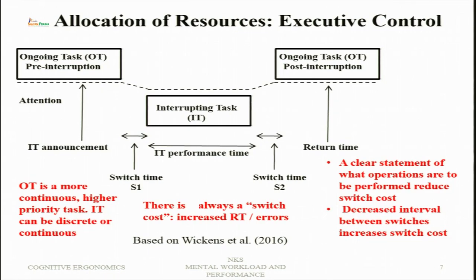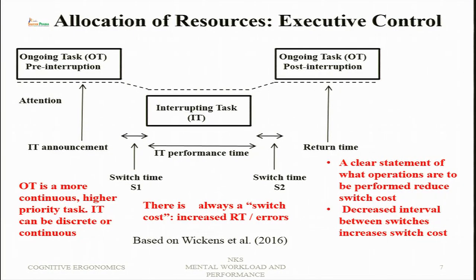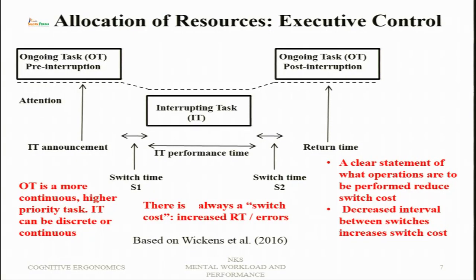How does allocation of resources work? How does executive control come into the picture? Executive control is a component of working memory. Basically there is an ongoing task — in a continuous task situation, for example a tracking task or ongoing audio-verbal speech. On an air traffic control tower, the radar operator is operating on some ongoing task, and in between there may be some interruption — rare or more frequent.